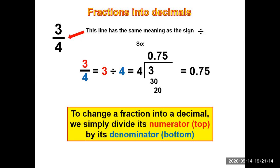Four into 20, you bring down zero again, you have your five. So you have 0.75. Well, that was easy! When I need to change, I have to take off my right hand, then bend my elbow behind my back, then put my left arm through my stomach, my feet behind my neck.